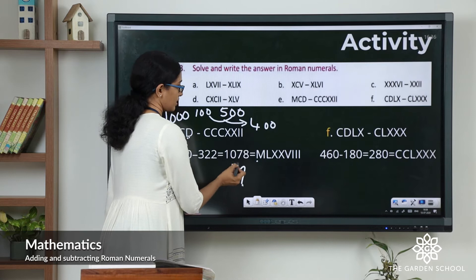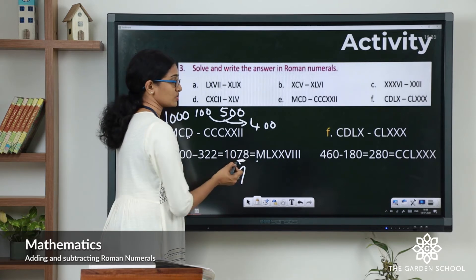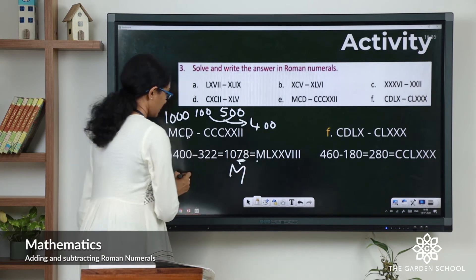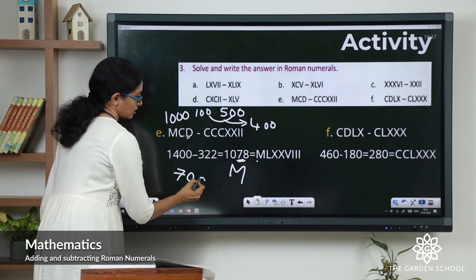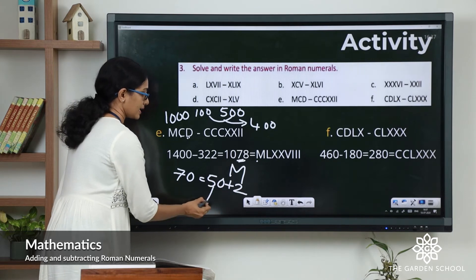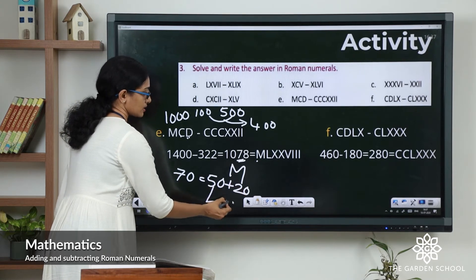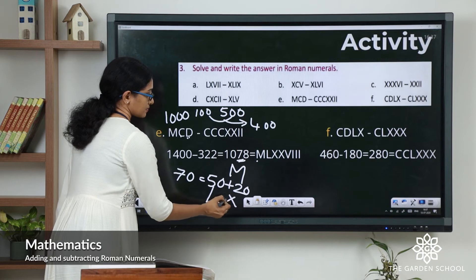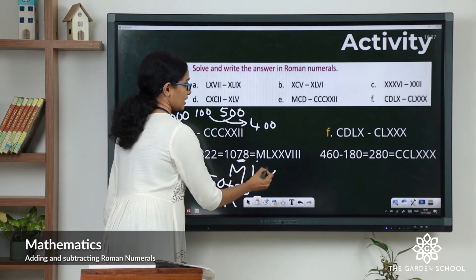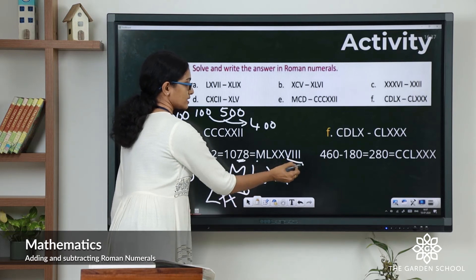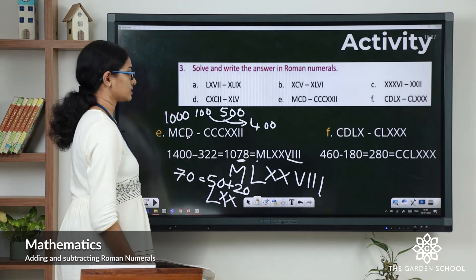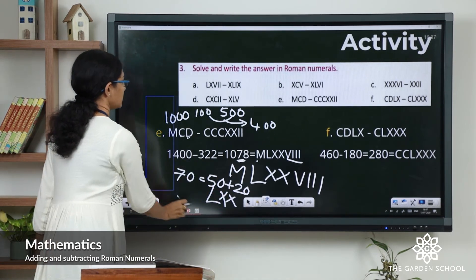How do we write 1078 in Roman numerals? 1000 is M. For 70, we don't have a direct symbol, so 70 equals 50 plus 20: L represents 50 and 20 is two X's. For 8 we have VIII — three I's... actually V plus three I's. So the answer is MLXXVIII. I hope this is clear.